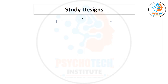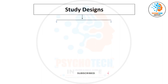When thinking about which study design is appropriate for your objective, the first question you ask yourself is: am I going to give some intervention or not? That's a very simple question. If you are not going to give an intervention, it means you are going to observe only — that is called an observational study.